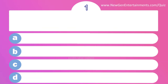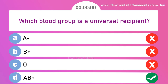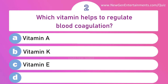Which blood group is a universal recipient? Options are: A) A negative, B) B positive, C) O negative, and D) AB positive. Answer is option D: AB positive.